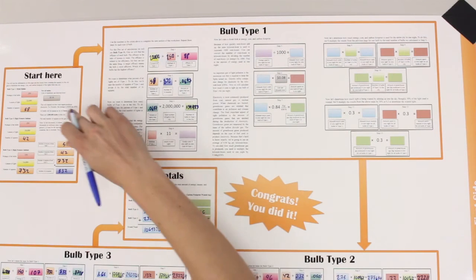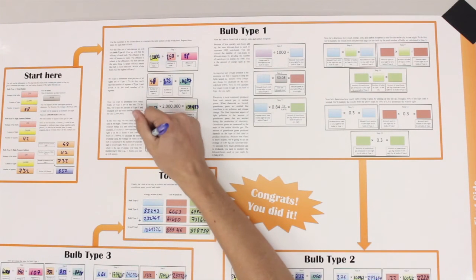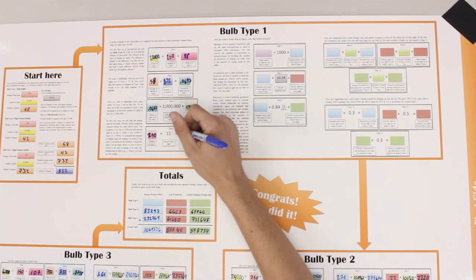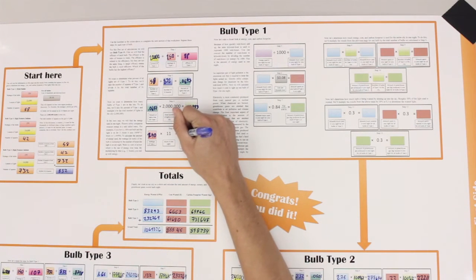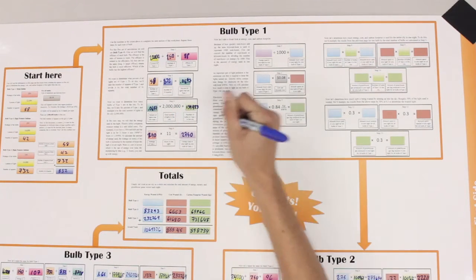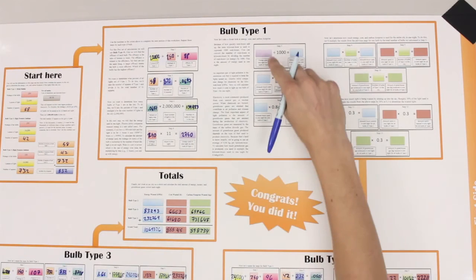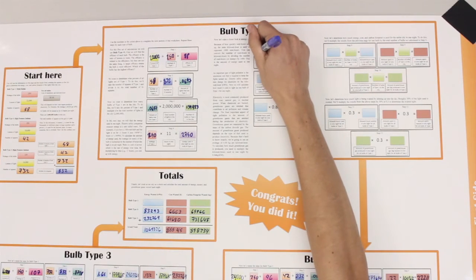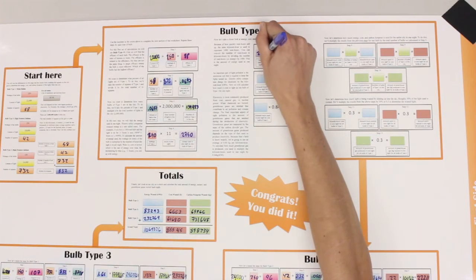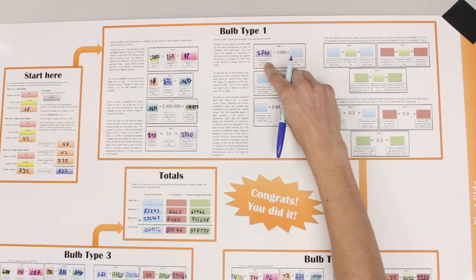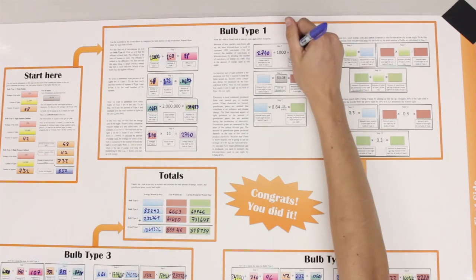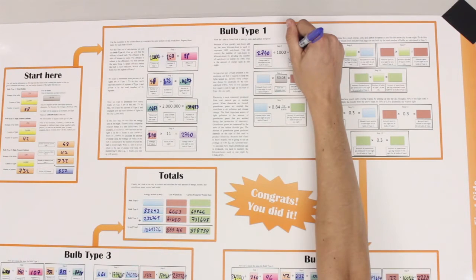In this box, take the wattage from over here in bulb type 1 and plug it in. This will give the energy used in one night by one bulb of type 1. Take this number and put it up here.